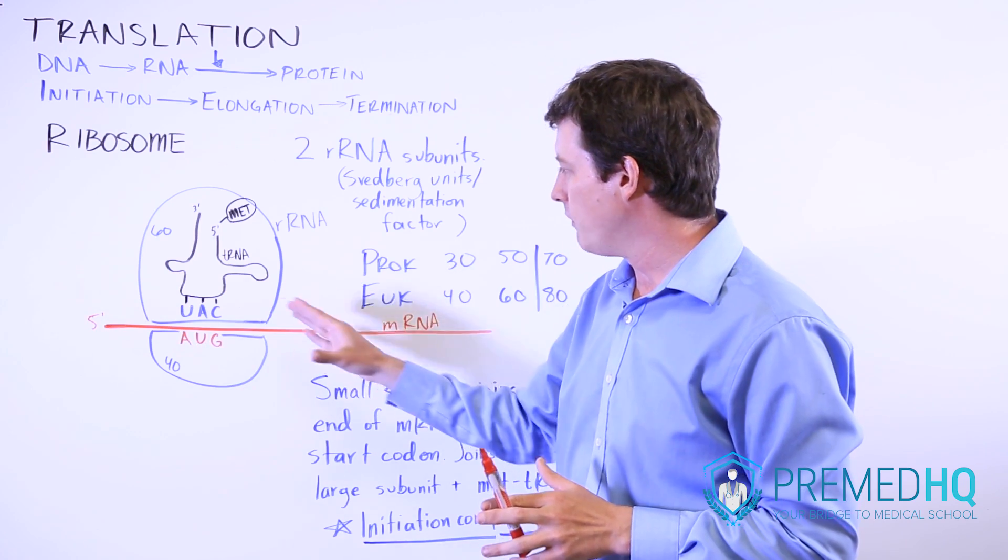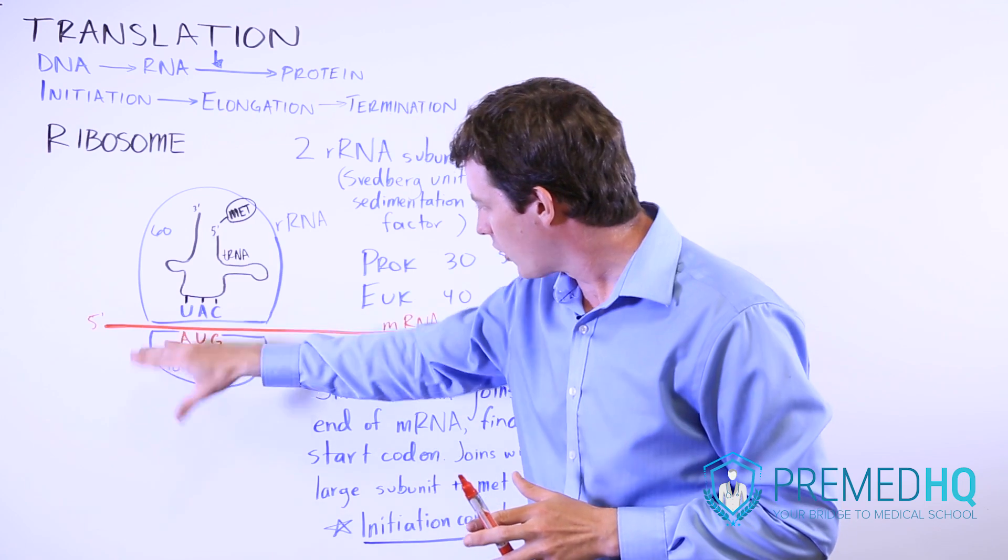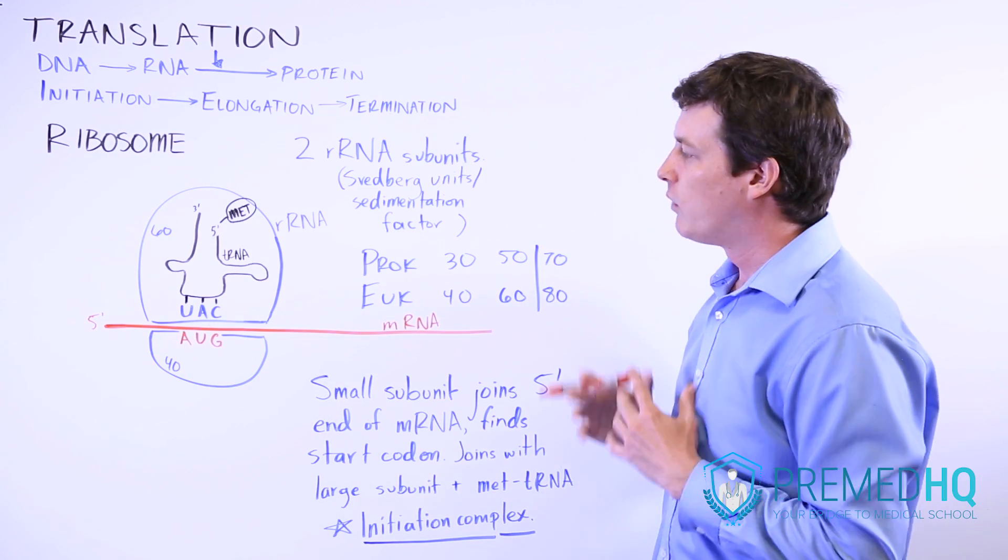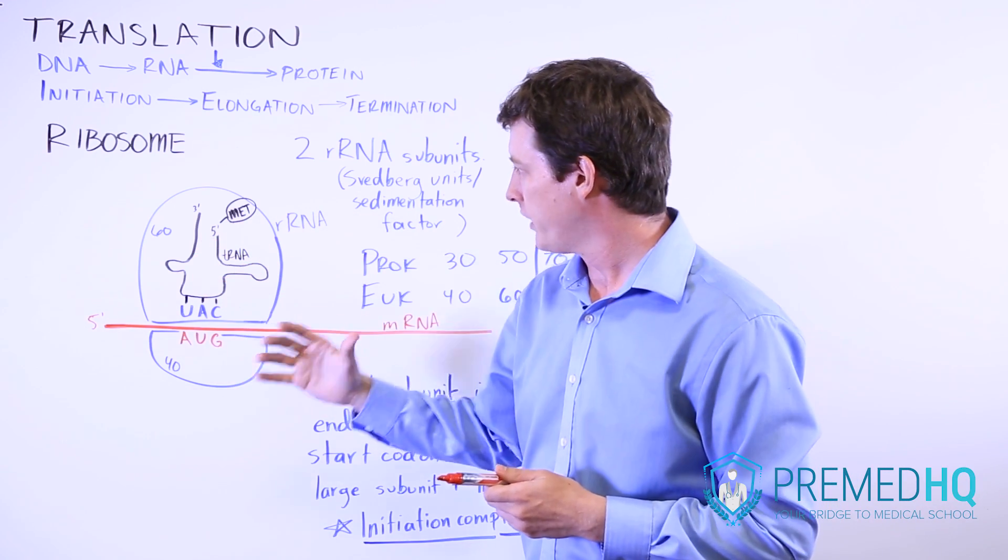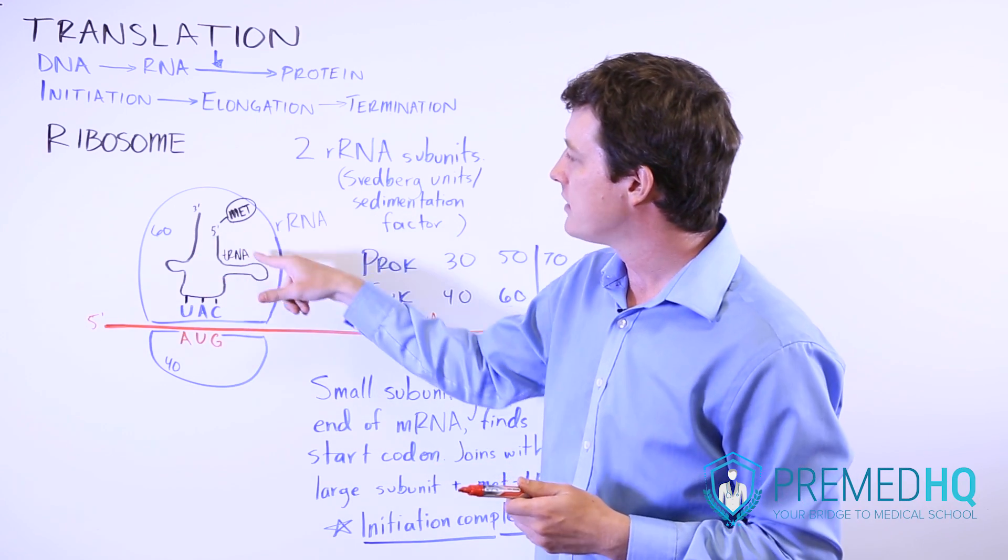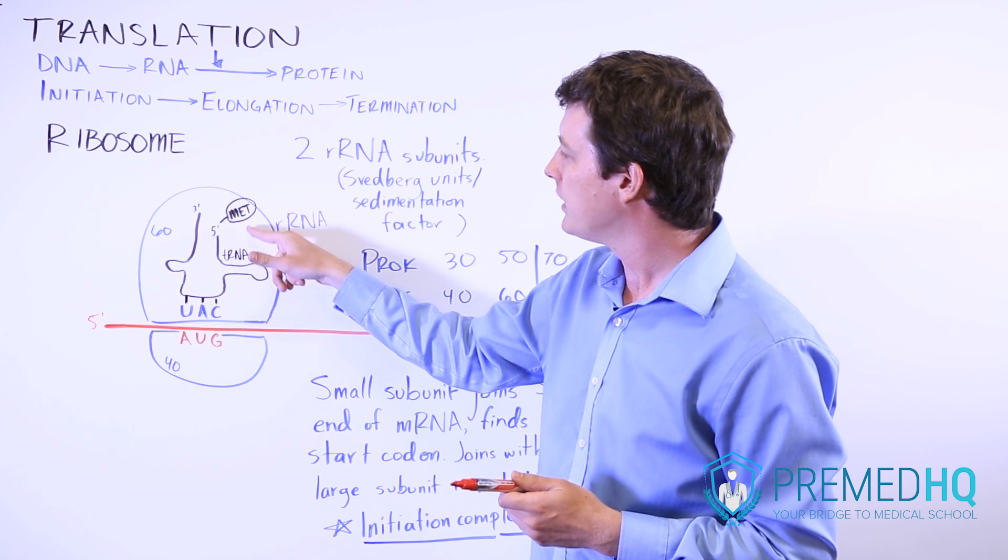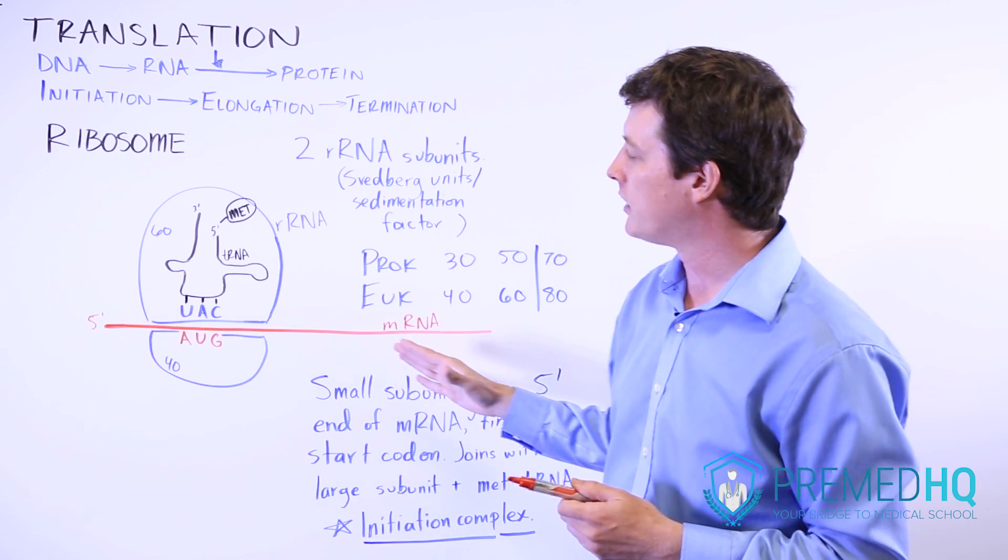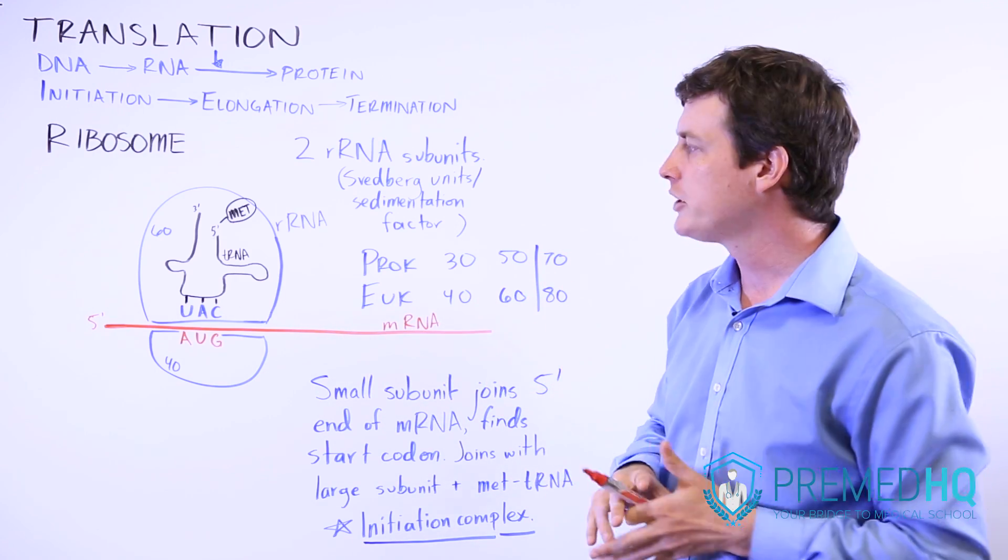AUG, which encodes methionine, is the start codon. So the small subunit finds this start codon. Then the large subunit will come and join, and you will get the tRNA that specifically encodes for methionine. Realize that this will have the UAC anticodon.